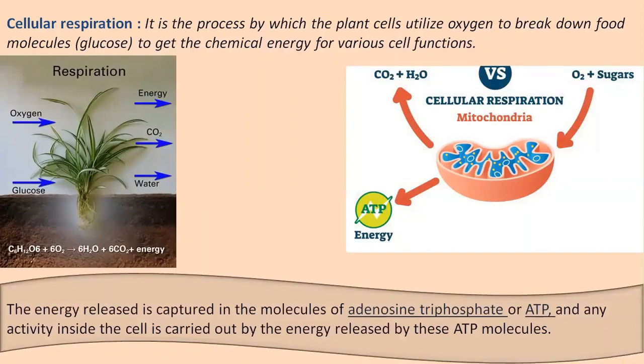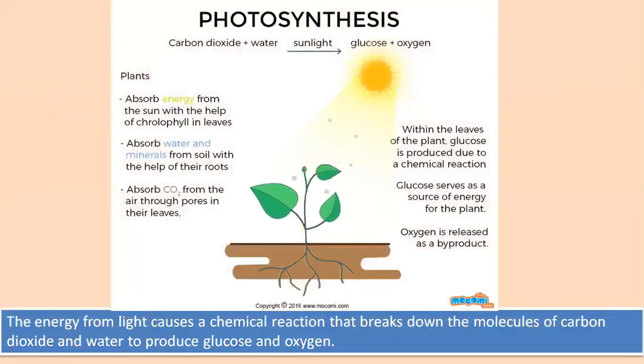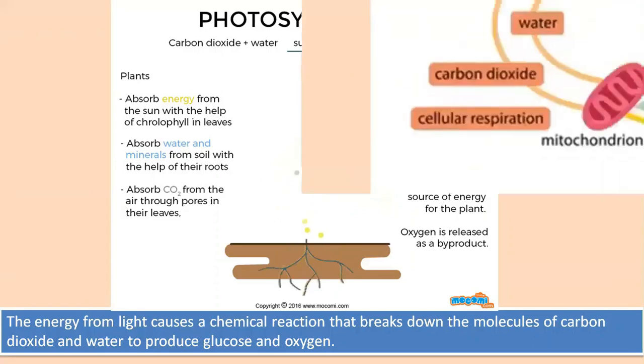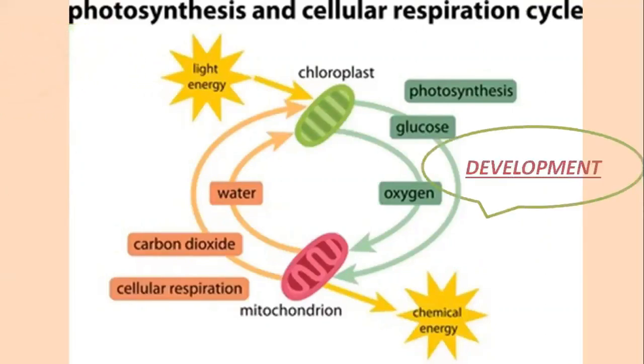You must be thinking that plants get their energy directly from the sun, so why do they need extra energy by breaking down glucose? There's a specific reason for it. The sunlight trapped by the chlorophyll pigment in the chloroplast of leaf cells provides energy specifically for photosynthesis. The energy from sunlight causes a chemical reaction that breaks down molecules of carbon dioxide and water to produce glucose and oxygen. But the energy which plants get from cellular respiration is specifically used for the growth of the plant, its development, and reproduction.